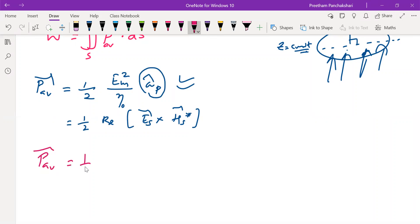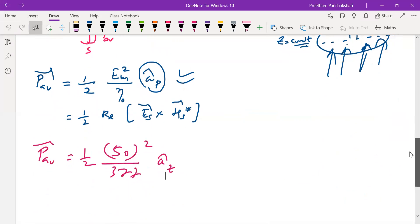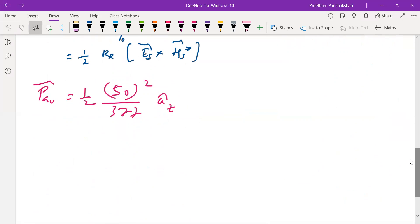P average: E_m maximum value is 50. Intrinsic impedance of free space is 377. So direction is a cap z as per the equation. Cross check once again. Yeah it is z. So this gives directly the value of 3.32 a cap z watts per meter squared as average Poynting vector.